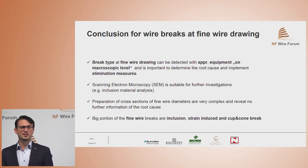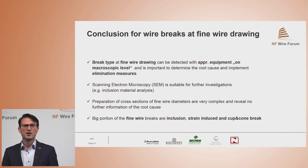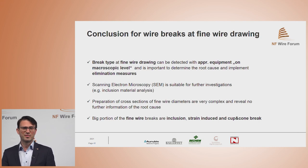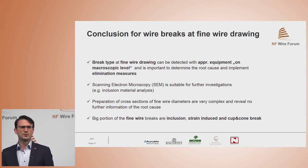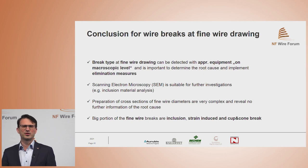In summary, break types in fine wire drawing can be detected with appropriate equipment at the microscopic level. It is important to determine the root cause and implement elimination measures. Scanning electron microscopy can help to investigate further and obtain additional information, for example on the inclusion material. Preparation of a cross section is very complex at these diameters. The large portion of fine wire breaks are inclusion, strain-induced, and cup and cone breaks. Thank you very much.